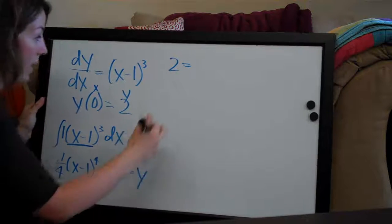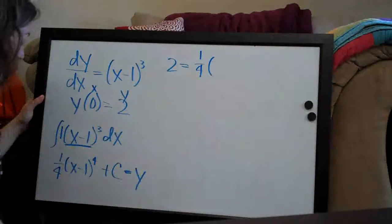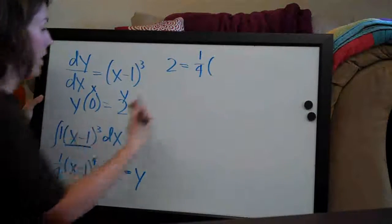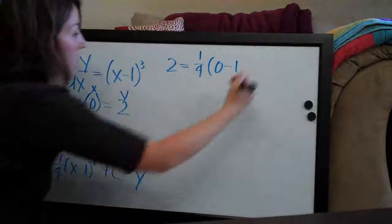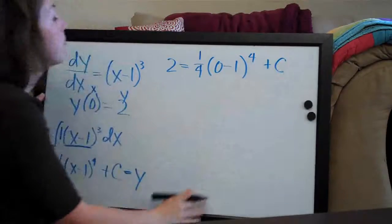So we plug in 2 for y, and then we say equals 1/4 times, and we're plugging in 0 for x, so (0-1)⁴ plus c.